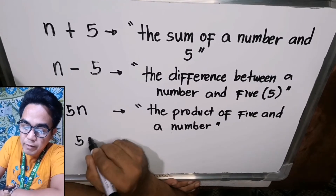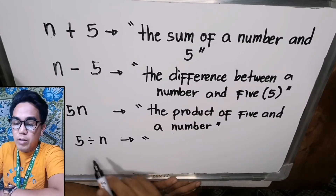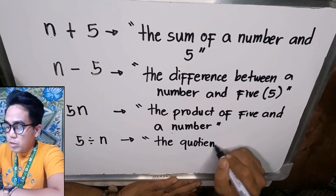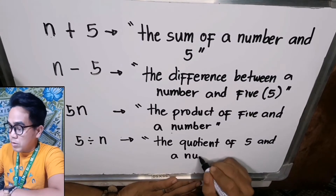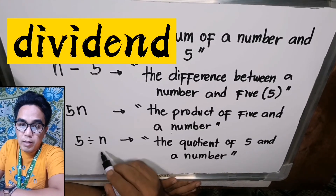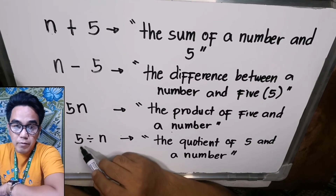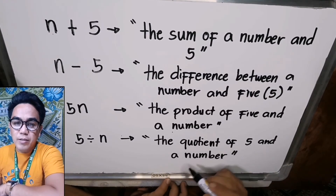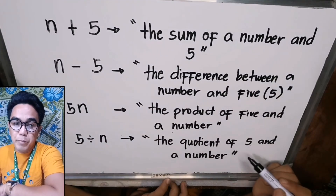Last is five divided by n. The key term for division is 'quotient,' so we say 'the quotient of five and a number.' The order here follows the dividend and divisor: five is the dividend and n is the divisor, so we put five first, then a number. These are the basic steps in translating a mathematical expression into a word phrase or verbal phrase.